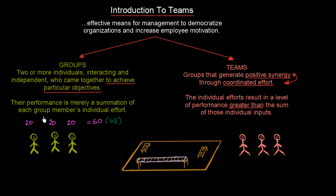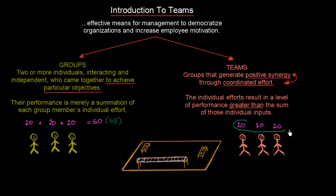Again, if we have the same three workers each producing 20, 20, and 20 units per day, and we decide to organize them as a team, then thanks to positive synergy and coordinated effort, they are going to produce 80 units when working as a team. So the team output exceeds what a simple group would produce.